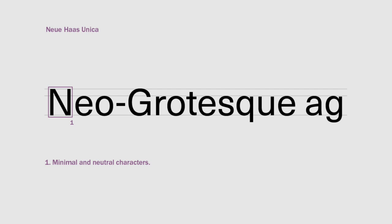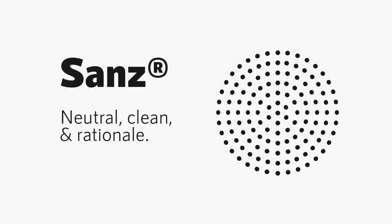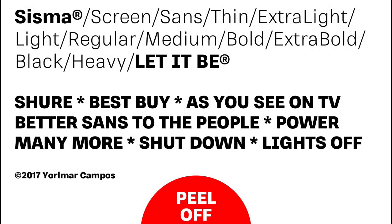The second subcategory is Neogrotesque. Neogrotesque typefaces are refined versions of grotesque fonts that came later in the 1900s. The letter forms become simpler, minimal, and neutral. The stroke is uniform throughout the letter form, and the terminals are usually perfectly straight, making them appear geometric. The characters E and A have a close aperture gap. The most notable feature of neogrotesque forms is the single-story g. Examples of neogrotesque font types are RNS Sans and RNS Sisma.